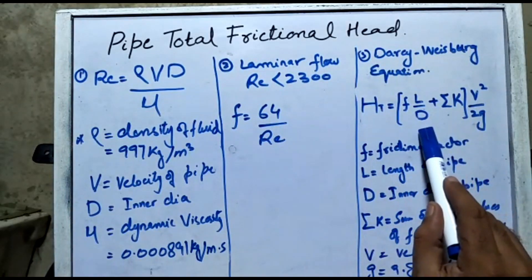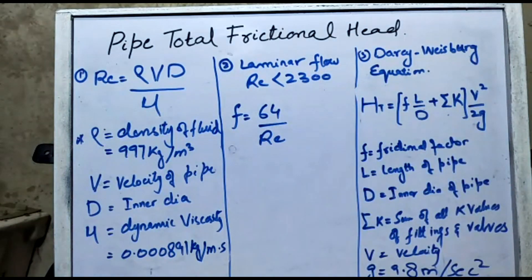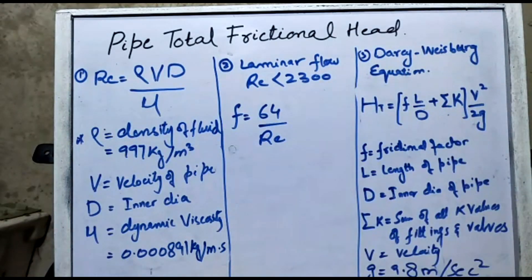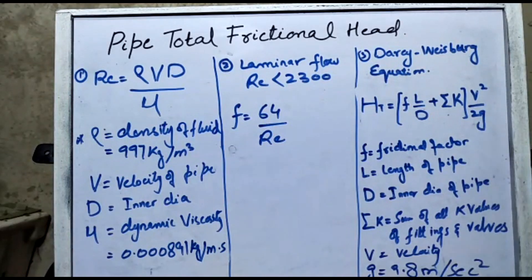...plus the sum of all K-values, multiplied by v²/2g. K-values are manufacturer data regarding the material of the pipe. For example, if we are using galvanized iron pipe, the elbow K-value, tee K-value, and other fitting K-values will be listed in the manufacturer data. v is the velocity of the fluid and g is the acceleration due to gravity, 9.8 m/s².